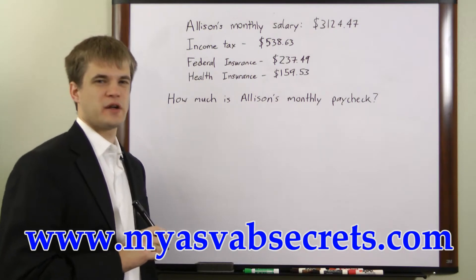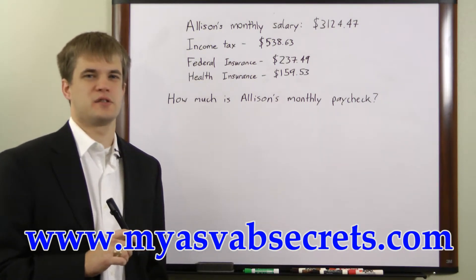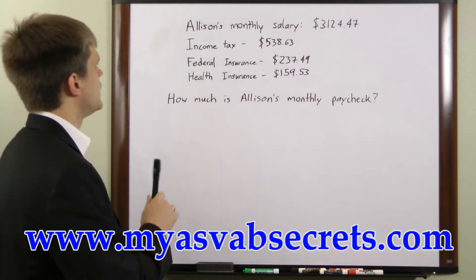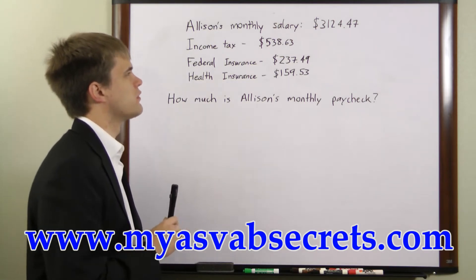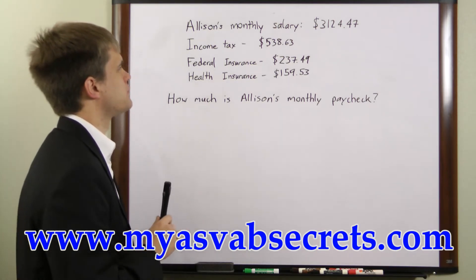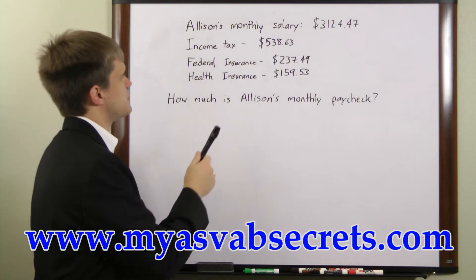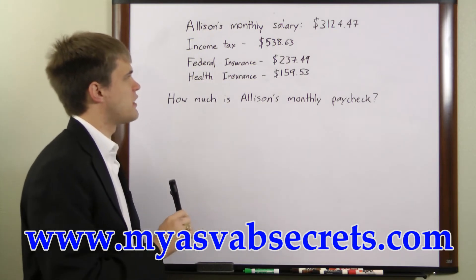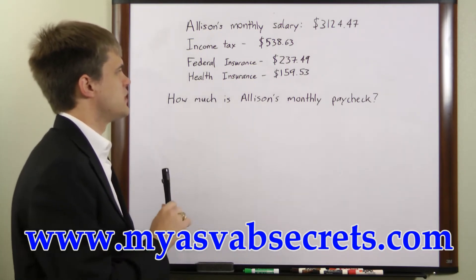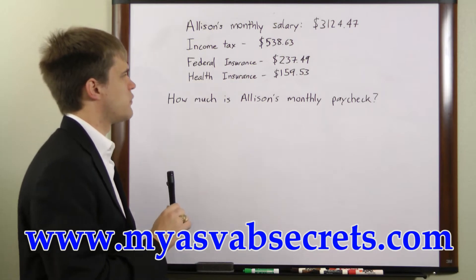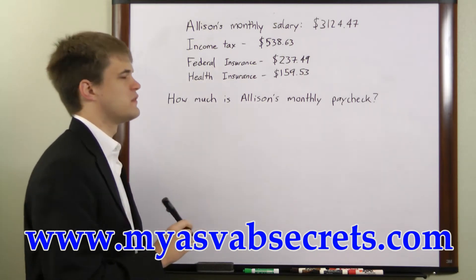Let's look at an example of how to calculate a paycheck after deductions. Here we're told Allison's monthly salary is $3,124.47 and she has three deductions: income tax of $538.63, federal insurance of $237.49, and health insurance of $159.53.